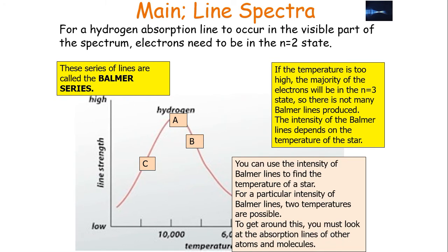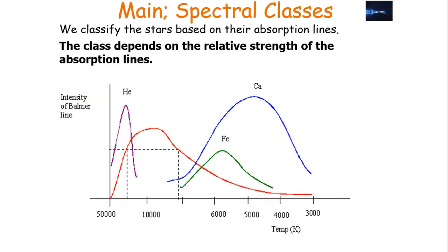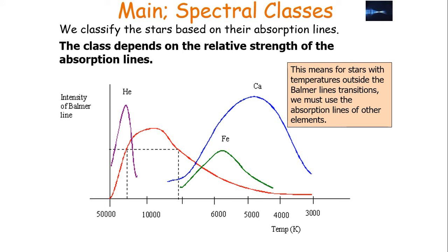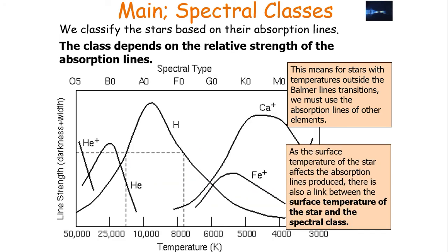You can use the intensity of Balmer lines to find the temperature of a star. However, for a particular intensity of Balmer lines, two temperatures are possible, as shown by the curved nature of the graph. To get around this, you have to look at the absorption lines of other atoms and molecules. So we classify stars not only by Balmer lines, but also by looking at the relative strength of absorption lines of different elements and other substances, especially for stars with temperatures outside the Balmer line transition range.